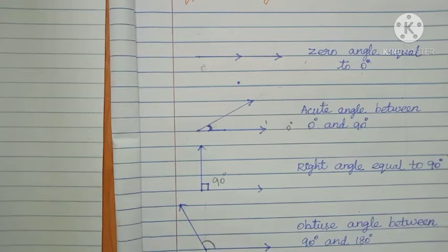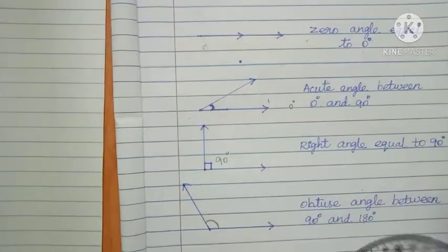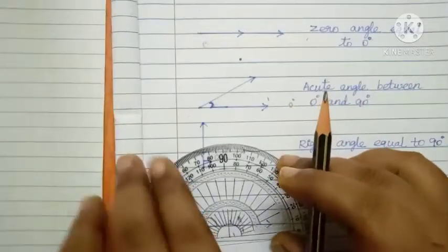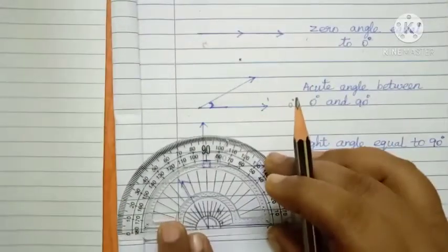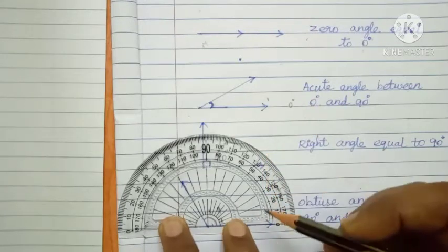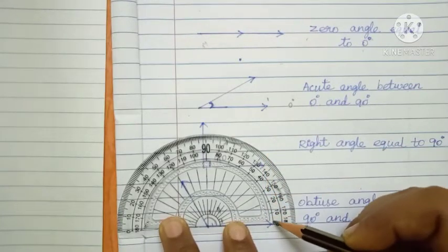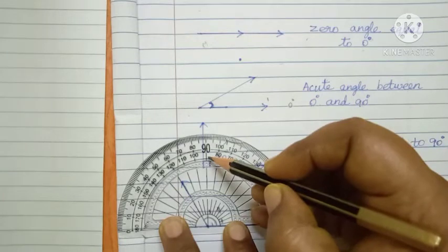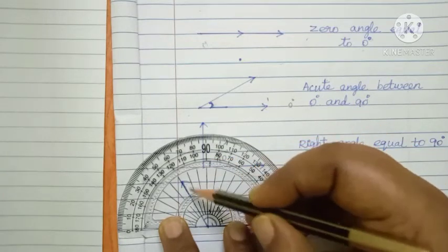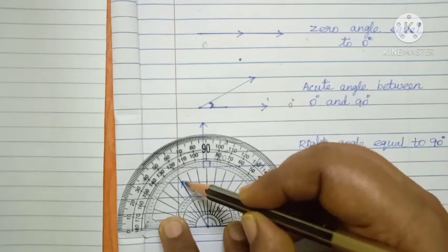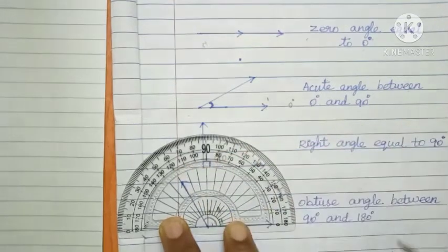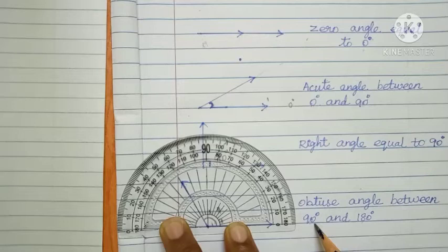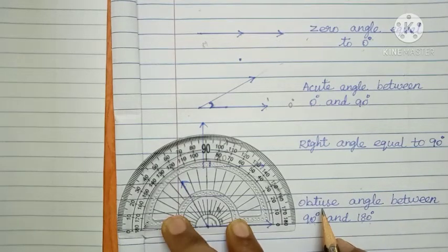Draw a line and use the protractor to measure. Keep the center here. From zero up to ninety — then it extends further to one hundred twenty. The arrow symbol is here. This angle is greater than ninety and up to one hundred eighty. That is called an obtuse angle.